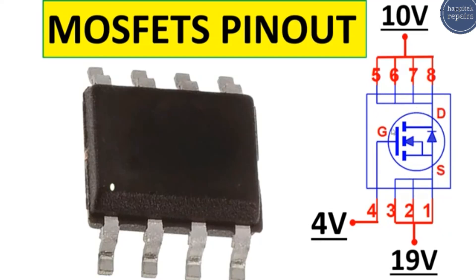The type of this MOSFET is N-channel — you can see why because the arrow goes from source to gate. When the arrow goes from source to gate, it means N-channel. But when the arrow goes from gate to source in the opposite direction, the MOSFET is P-channel.